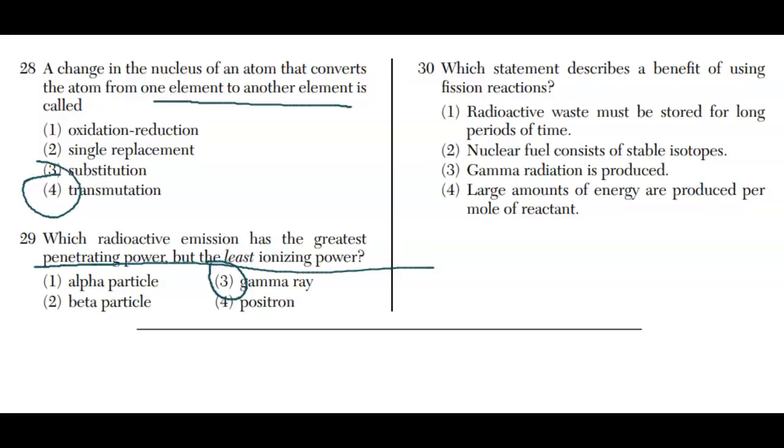Finally for 30, which statement describes the benefits of using fission reactions? Fission reactions are the reactions for our nuclear power plants. The benefit is number four: large amounts of energy produced per mole of reactant. That also goes for fusion, but they asked about fission. This ends Part A questions for the January 2020 Regents exam. Check out Part B1 next. Keep working hard and good luck.